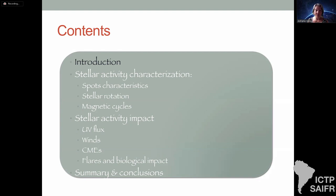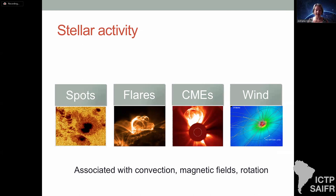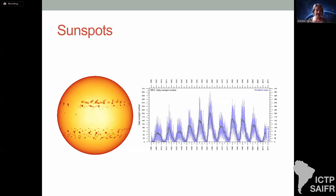Before I talk about that, let me briefly describe stellar activity. It is manifested mainly as spots — dark magnetic features on the photospheres of stars — flares, which are the most energetic phenomena in the solar system, coronal mass ejections (CMEs), and stellar winds. All these phenomena are associated with convection, magnetic fields, and rotation, and are all of magnetic origin — generated by a dynamo just as Gustavo described.